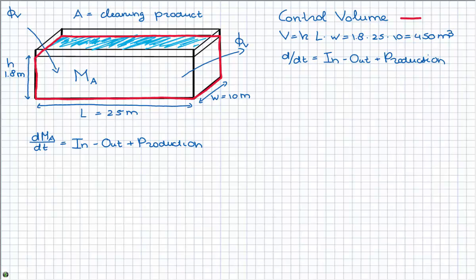Now, we don't have any inflows. Water is flowing in, but no cleaning product. And this is a balance over the cleaning product, and there is no production since there is no chemical reaction. So, then I get dMA/dt.